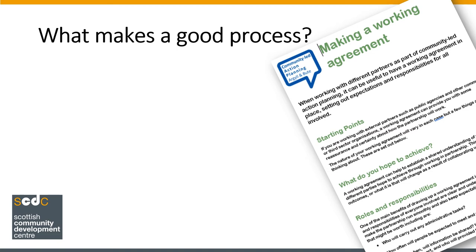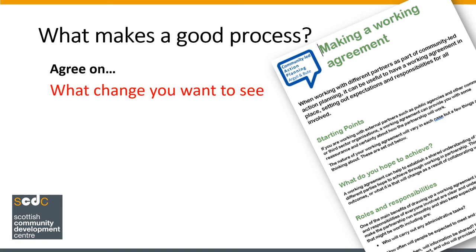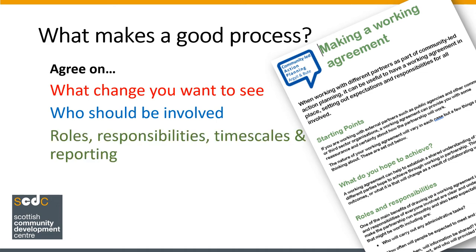Some of the things to ensure are in place are: what change you want to see — the outcome; who should be involved, including from your group, from the Public Service Authority, and anyone else; the different roles and responsibilities that people will have; what the timescales will be and how reporting will work; how you will work together in terms of practical arrangements for meetings; and also in terms of the approaches used — for instance, one approach might be to use less formal discussions rather than structured meetings, which can be intimidating.